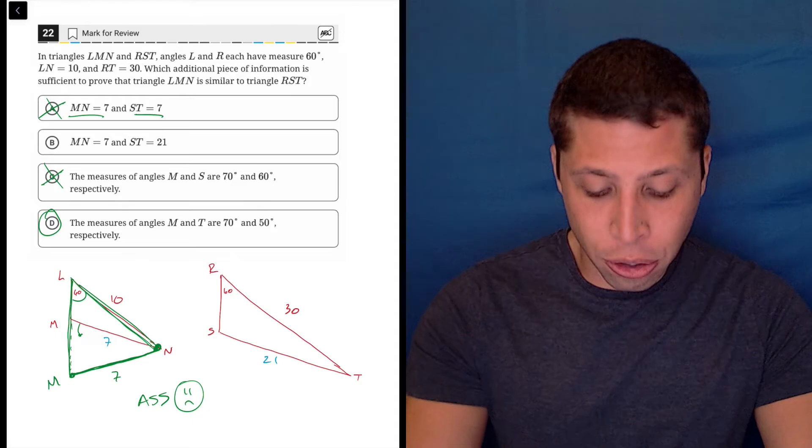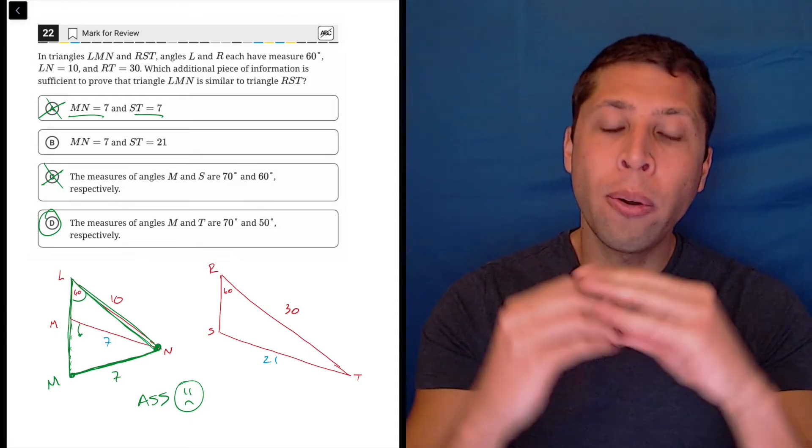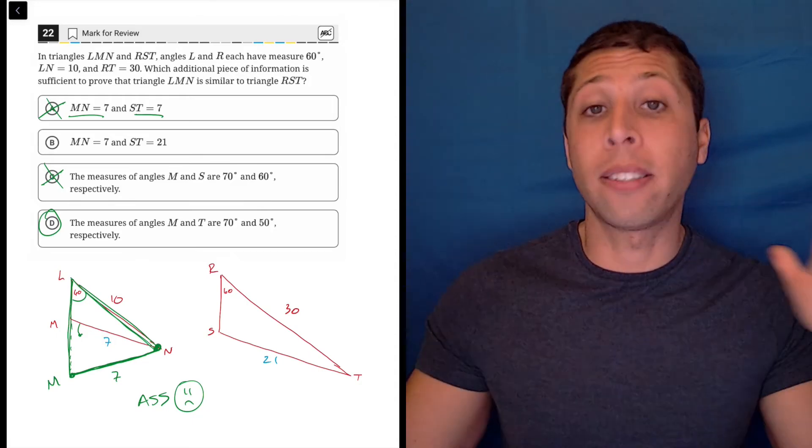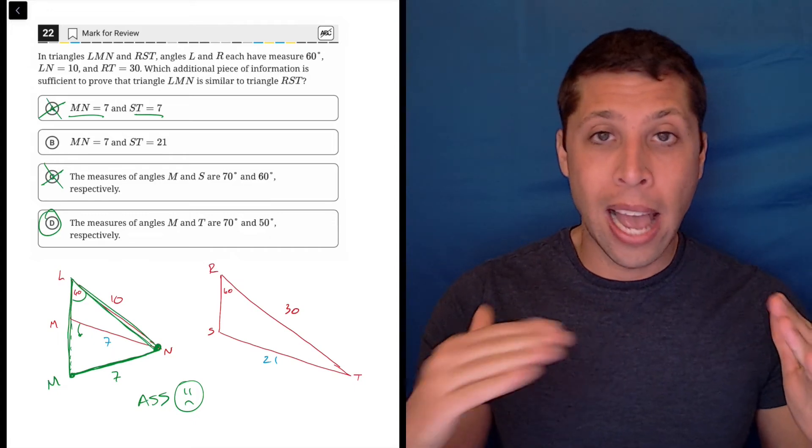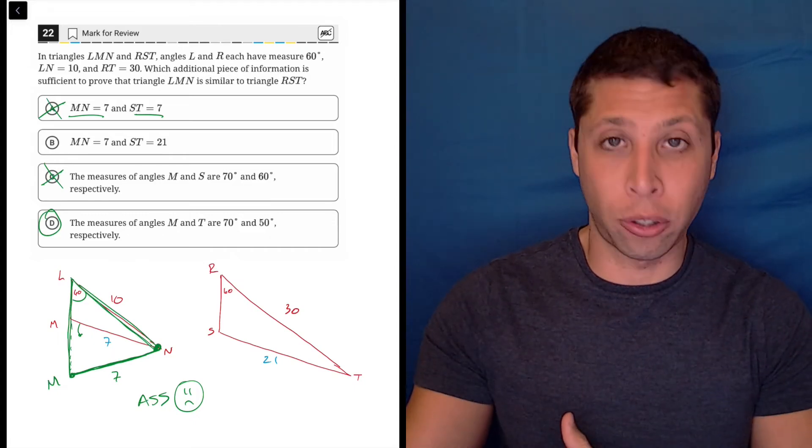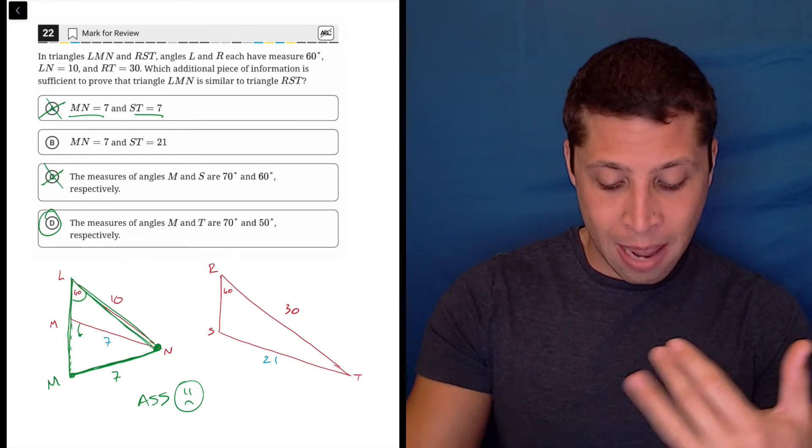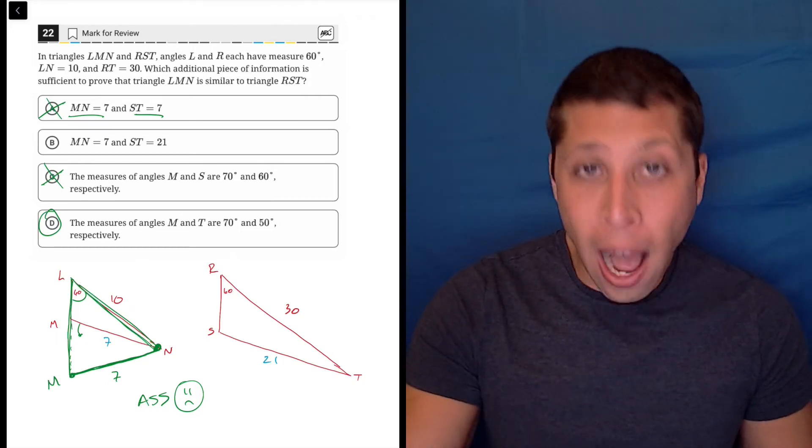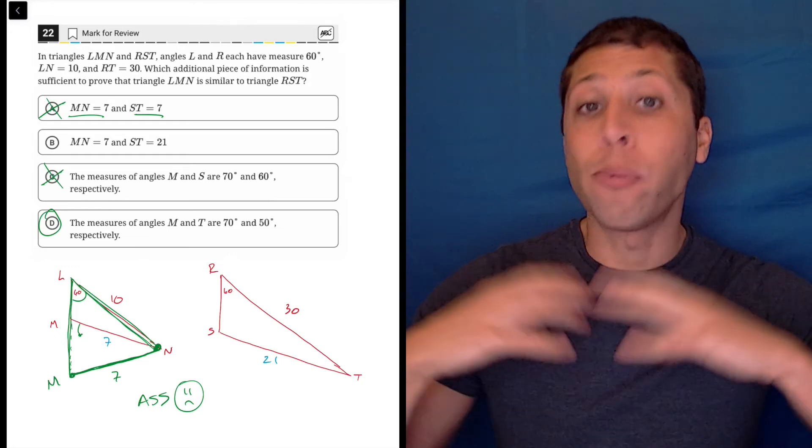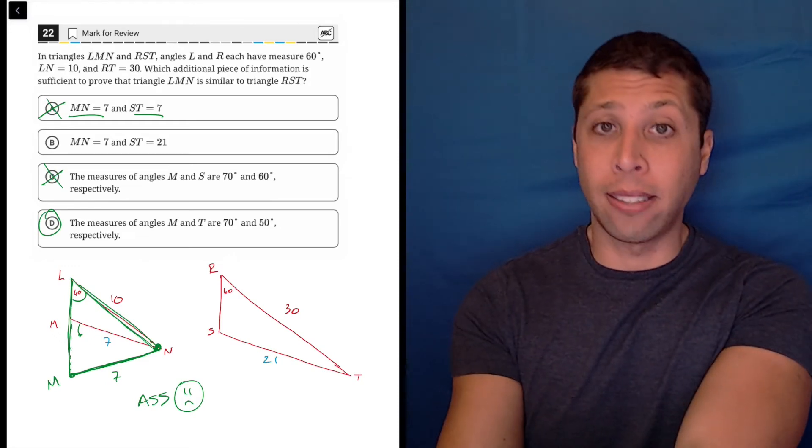But it has to do with the fact that there's this unknown angle that could kind of exist in two places with the same lengths attached to it, and so you can form two different triangles. They have sides that look like they're in proportion, but that third unknown side would not be in proportion, and the angles inside would not be consistent other than that 60.